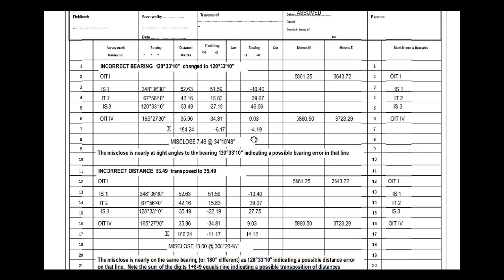We can see that 34° is very close to being at right angles to the bearing of 120°, which indicates a possible bearing error — because the actual misclose is at right angles to that line. So we'd investigate that line first. Looking for bearings that are at right angles to the bearing of the misclose can point you toward the source of the error.